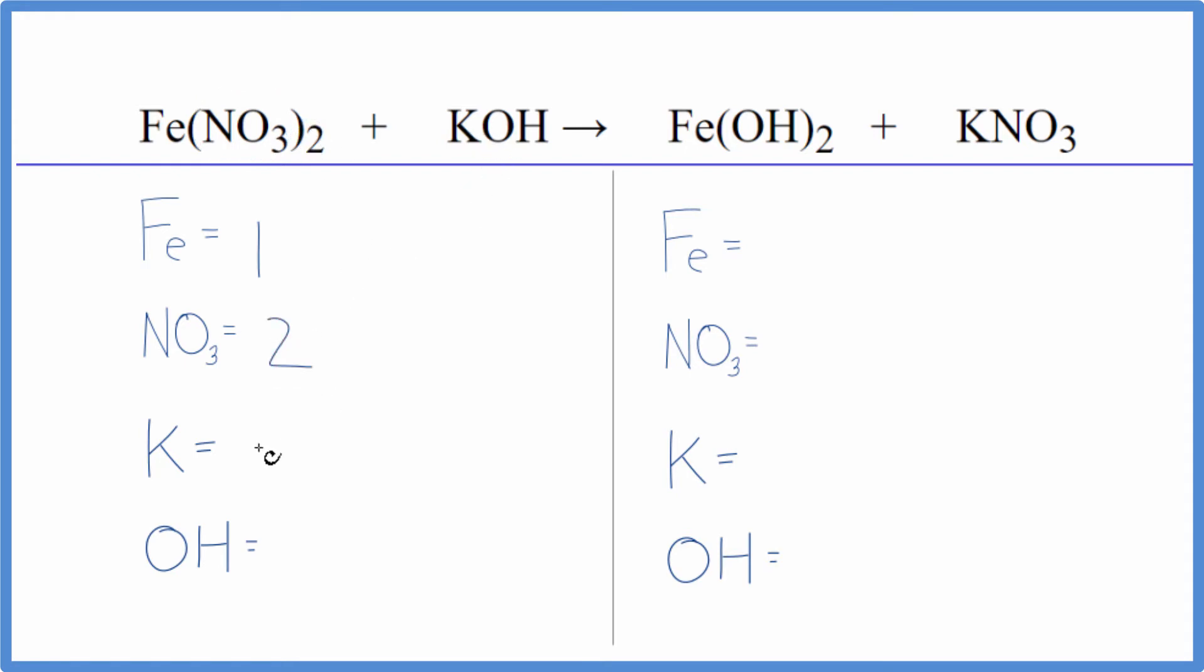I have one potassium atom and then this OH, this is the hydroxide ion. I have it here and I have it here again. So I just count this as one thing. I have one hydroxide ion here. And these numbers are a lot easier to deal with when you're balancing equations.